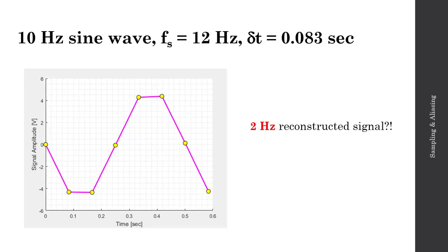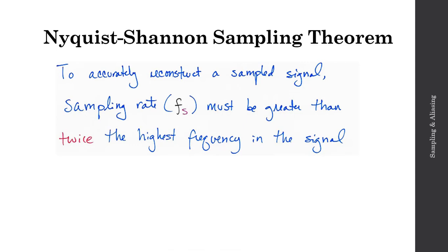Let's explore how to avoid this sampling phenomena. The Nyquist-Shannon sampling theorem says that to accurately reconstruct a sampled signal, the sampling rate, or Fs, must be greater than twice the highest frequency in the signal. Another way to write this is Fs must be greater than 2 times Fm, where Fs is my sampling rate, and Fm is the highest or maximum frequency in my signal.